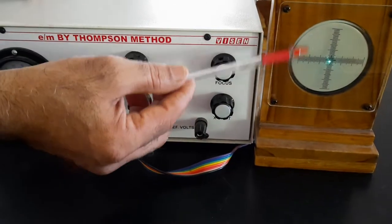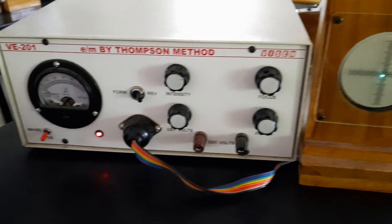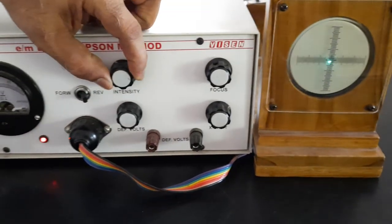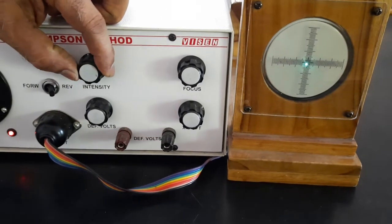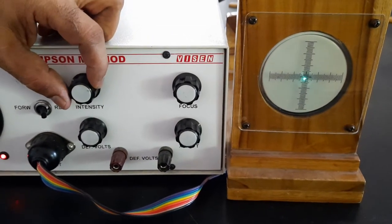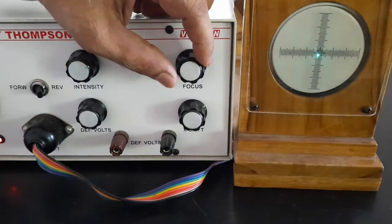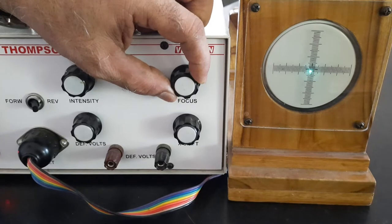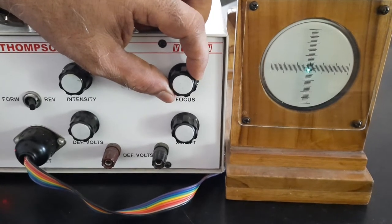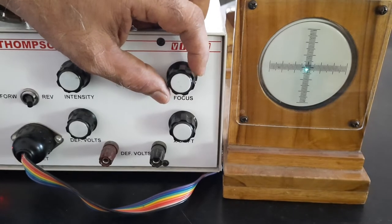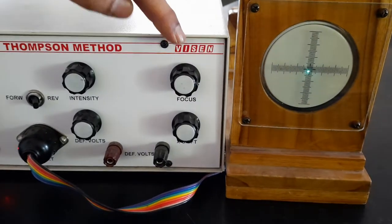Looking at the power supply, there are controls including intensity. The intensity control adjusts the brightness of the spot of light on the screen. There is also a focus control. I can get a very fine spot of light on the screen using the intensity and focus options.